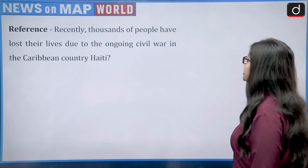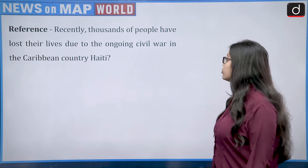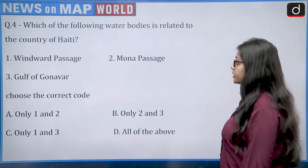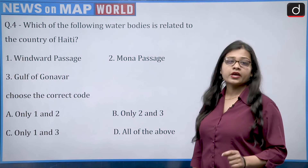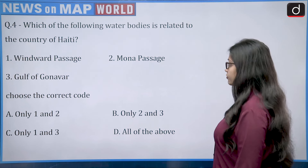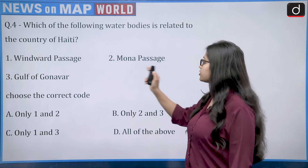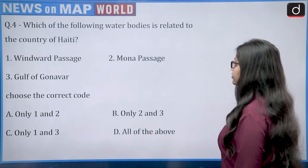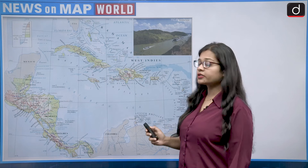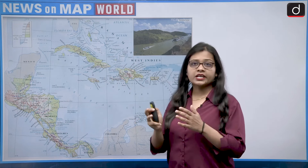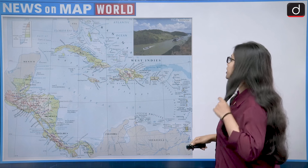The next reference is about the ongoing civil war in the Caribbean country of Haiti, in which thousands of people have lost their lives. The question asks: which of the following water bodies is related to the country of Haiti? Three water bodies are given — Windward Passage, Mona Passage, and Gulf of Gonave. Haiti is a Caribbean country; the Caribbean islands exist in two forms — the Greater Antilles (larger islands) and the Lesser Antilles (smaller islands).